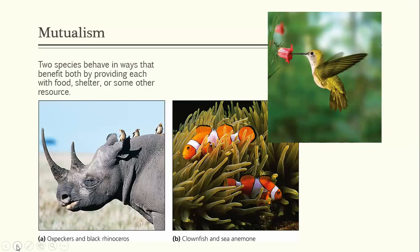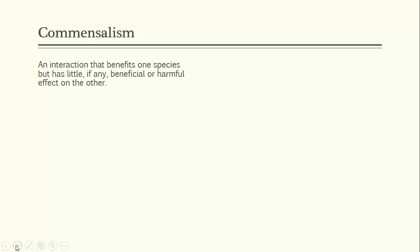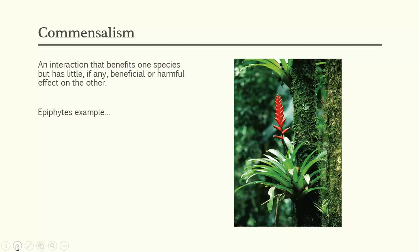Commensalism is an interaction that benefits one species but has little effect on the other. An example exists between trees and epiphytes. The epiphyte — or air plant — roots on the trunk of a tree rather than in the soil, collecting water that runs down the bark and gaining better access to light than it would on the ground. The tree remains completely unharmed and gains no benefit, as shown in this picture from Brazil's Atlantic Tropical Rainforest on page 111 of the textbook.